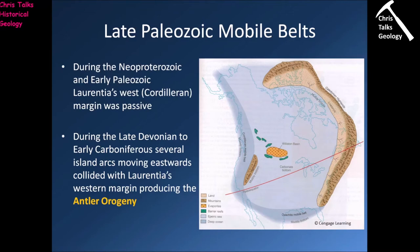Regarding the mobile belts that are deforming: we're concerned about the Antler orogeny occurring on the modern-day west coast, and the Acadian and Alleghanian orogenies on the east coast. During the Neoproterozoic and early Paleozoic, Laurentia's western margin was passive — relatively peaceful with not much happening. During the late Devonian to early Carboniferous, several island arcs moved eastward and collided with the modern-day west coast, and one of these collisions produced the Antler orogeny.